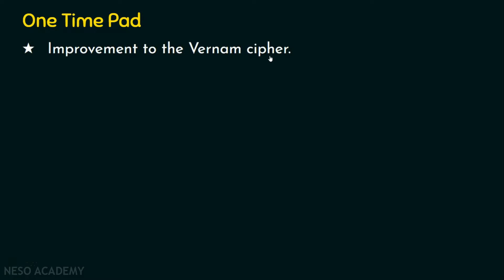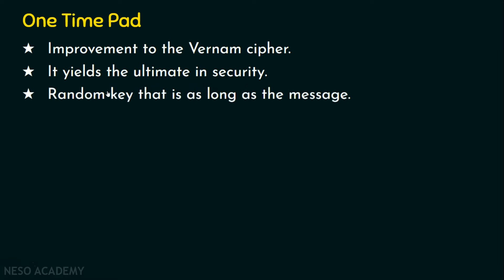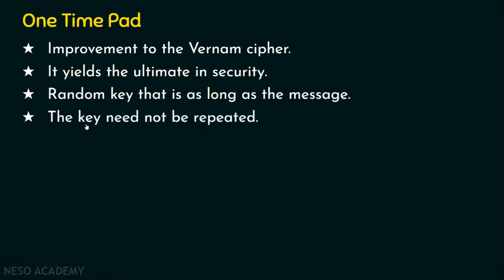The one-time pad is an improvement to the Vernam cipher. The main difference is that in the original Vernam cipher the keyword is repeated, whereas in the one-time pad version the keyword is not repeated and is also truly random in nature. This one-time pad yields the ultimate in security because a random key is used that is as long as the message. Since the key is random and equals the message length, there is no need for the key to be repeated, offering better security than the original Vernam cipher.